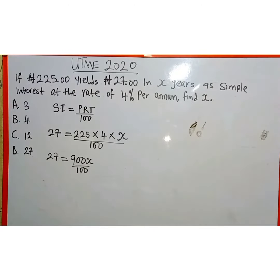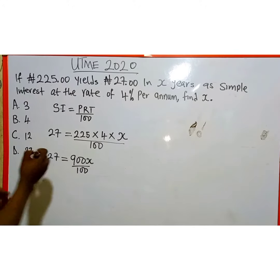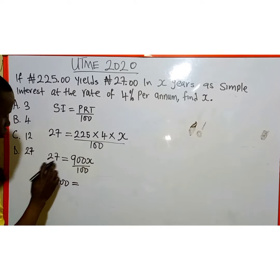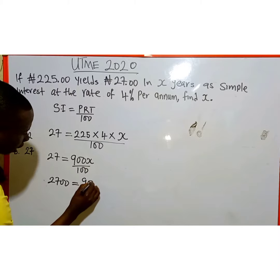The next thing we are going to do is cross multiply. 27 multiplied by 100 gives us 2700, which equals 900X.